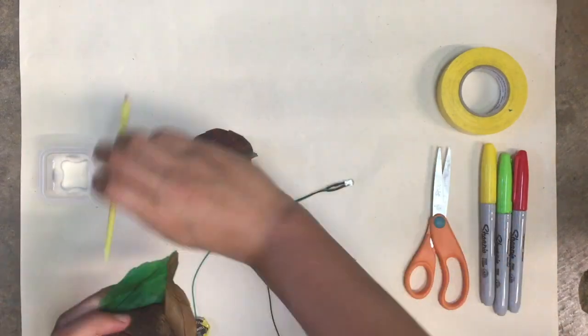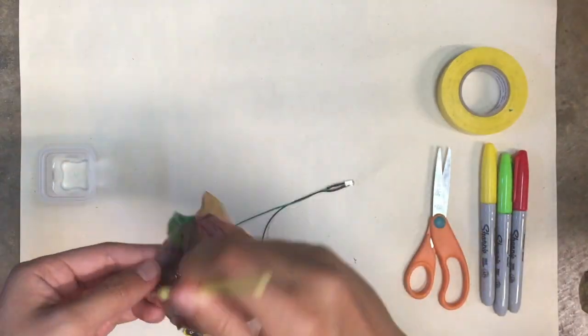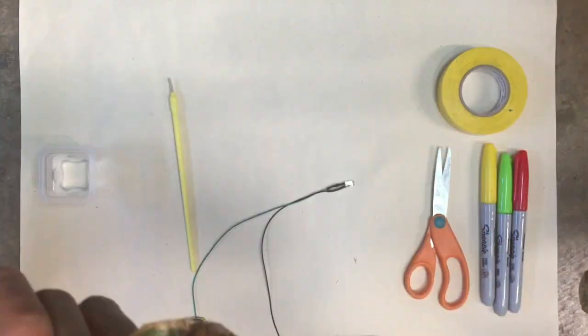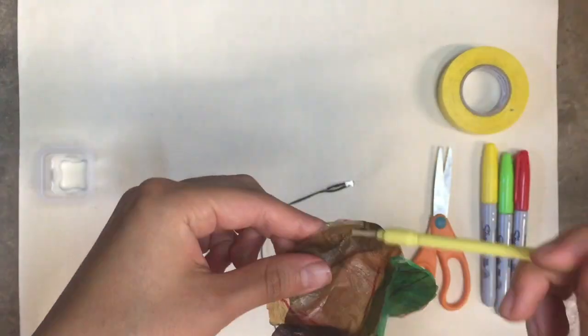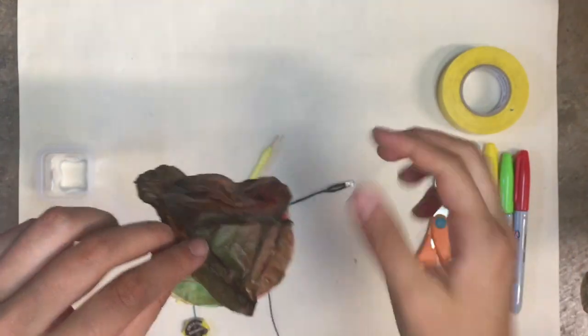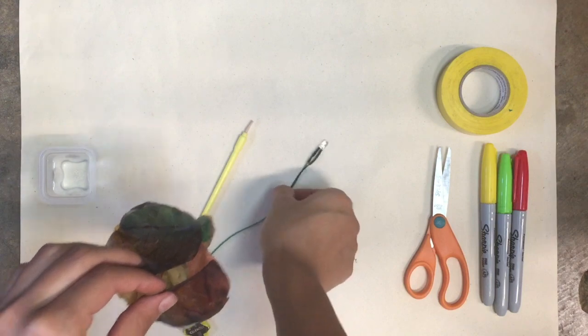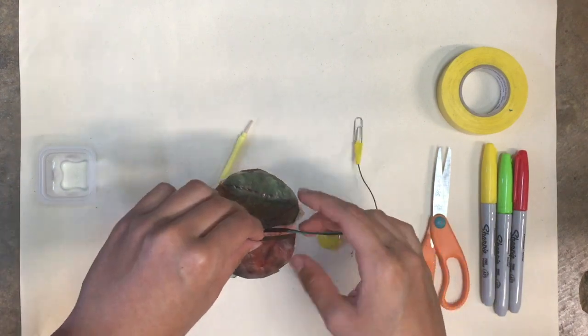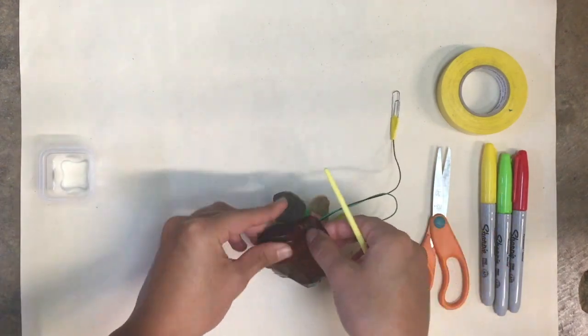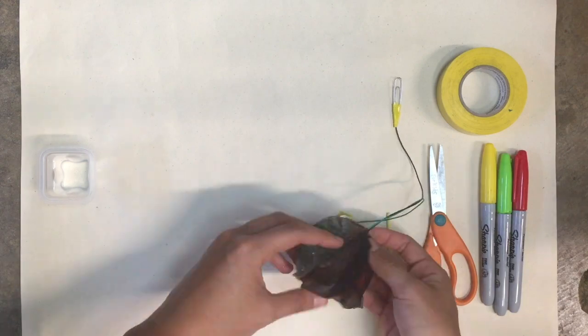Now attach the two halves together by lining up the openings and sticking the tabs together, but leave one side, as in one set of tabs, unattached. Now stick in your LED light whether it is on wire or just attached directly to the battery. Now you can close that final set of tabs together with the light inside. You can add more glue or water to the tabs if they aren't sticking together well.